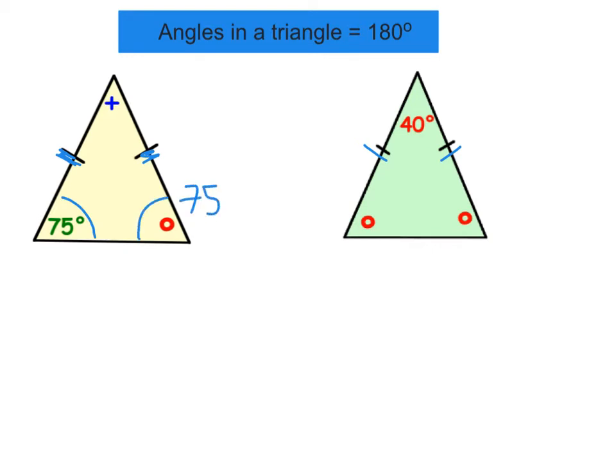So the red circle is 75 degrees in this question. So to find the blue cross, all we'd now need to do is 180 minus 75 minus 75, which is 30 degrees. So the blue cross is 30 degrees.